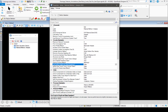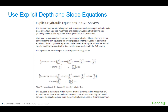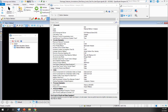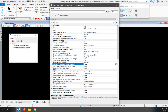Next, do we want to use explicit depth and slope equations — true or false? The standard approach to solving hydraulic equations to calculate depth and velocity in the pipe involves iteratively solving pipe geometry and head loss equations. If you have a large model, this can be slow. So if we set this to true, we can solve these equations explicitly without any iterations and significantly reduce the time to solve large models with the GVF solvers. This equation is going to be accurate within 1% over most of its range and no worse than 3%. By default, I'm going to leave this at false, and if you are going to be running a larger model, you may consider changing that to true.